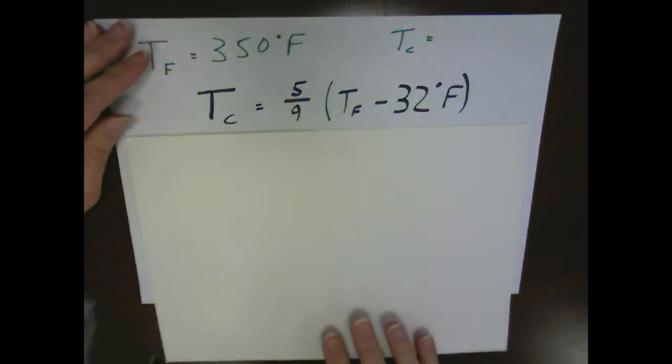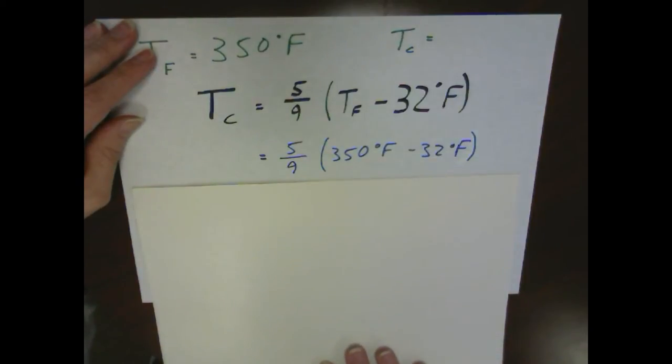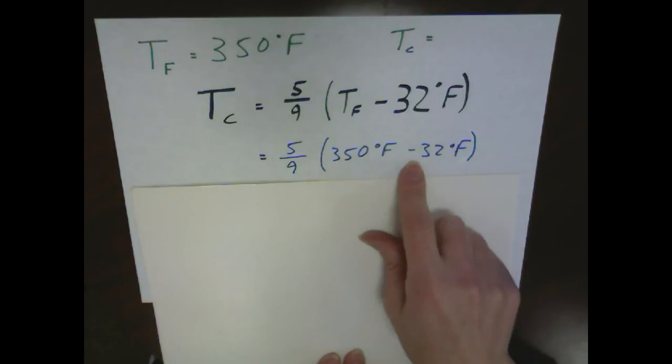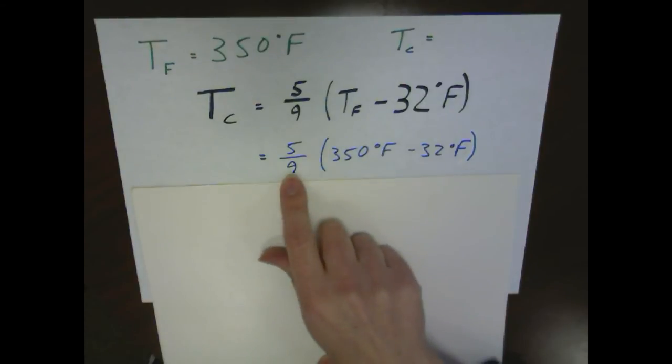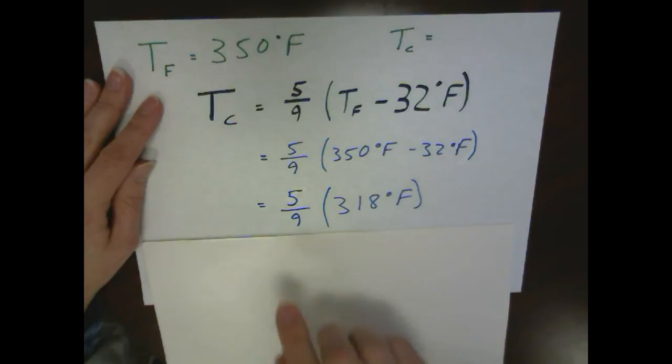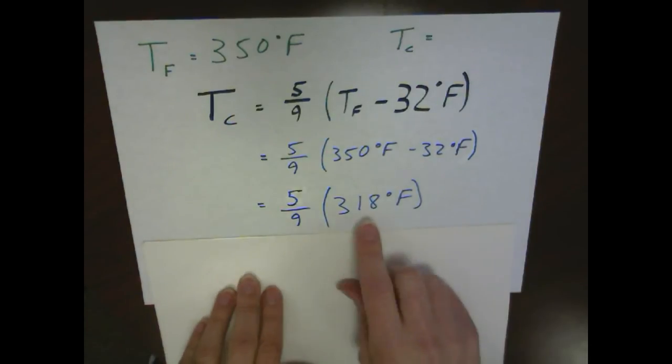When we go to plug in our equation, we put our temperature in Fahrenheit in and we've got the quantity of 350 degrees Fahrenheit minus 32 degrees Fahrenheit. So we're taking care of the offset here before we take care of the scale changes. And that's going to give us a value of 5 ninths out front of 318 degrees Fahrenheit.